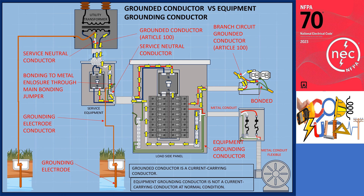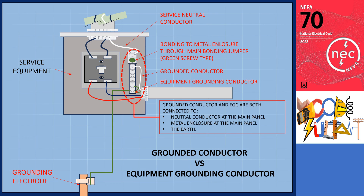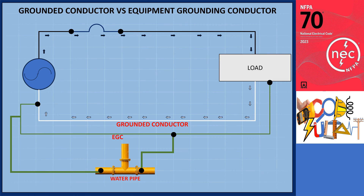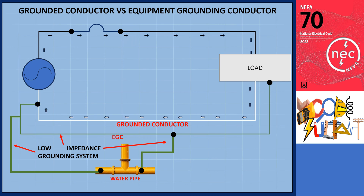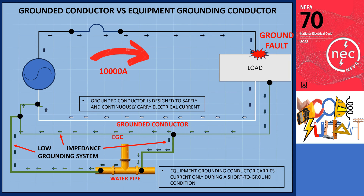This distinction is important because an equipment grounding conductor (EGC) that is bare or green is not considered a current-carrying conductor under normal conditions. This is where the difference lies between these two types of conductors. Both the grounded conductor and the equipment grounding conductor are connected to the system-neutral conductor at the main panel, to the metal enclosure at the main panel — which serves as the first means of disconnect — and to the earth. The key difference is that the grounded conductor is designed to safely and continuously carry electrical current, while an equipment grounding conductor carries current only during a short-to-ground condition, when electrical current is briefly introduced to normally non-current-carrying metal parts.